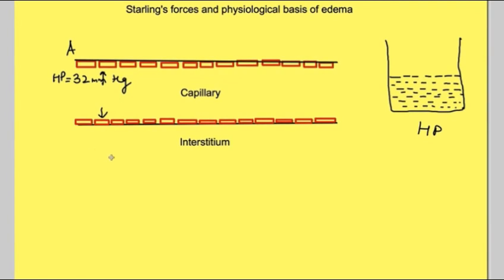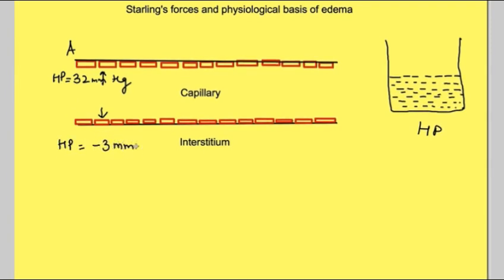Some fluid is also present in the interstitial space. However, due to pull by the tissues, a negative hydrostatic pressure of minus 3 mmHg is generated in the interstitial space. There is another force which tends to draw in water, and that is osmotic pressure.